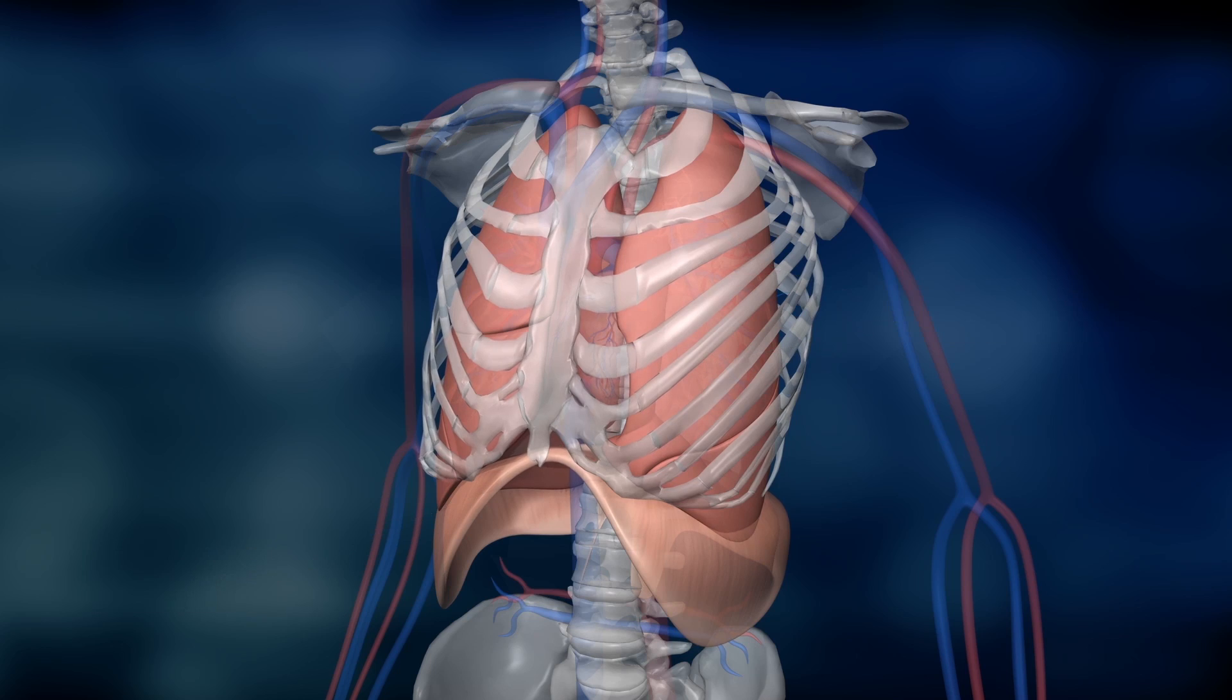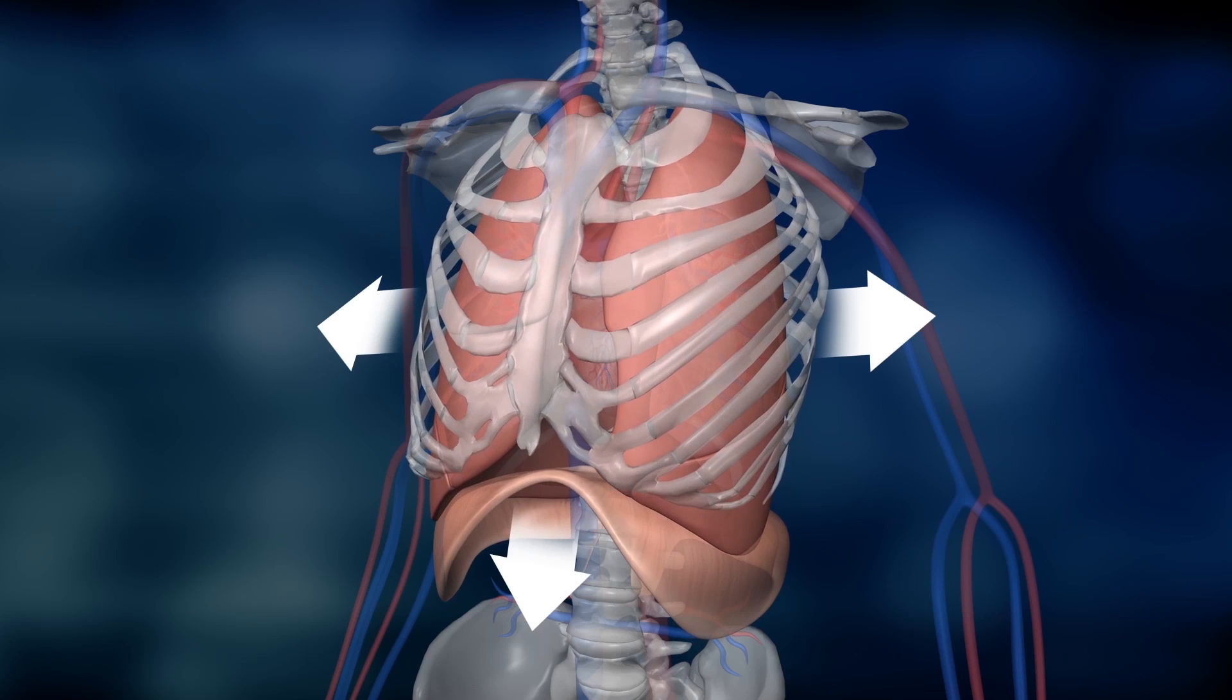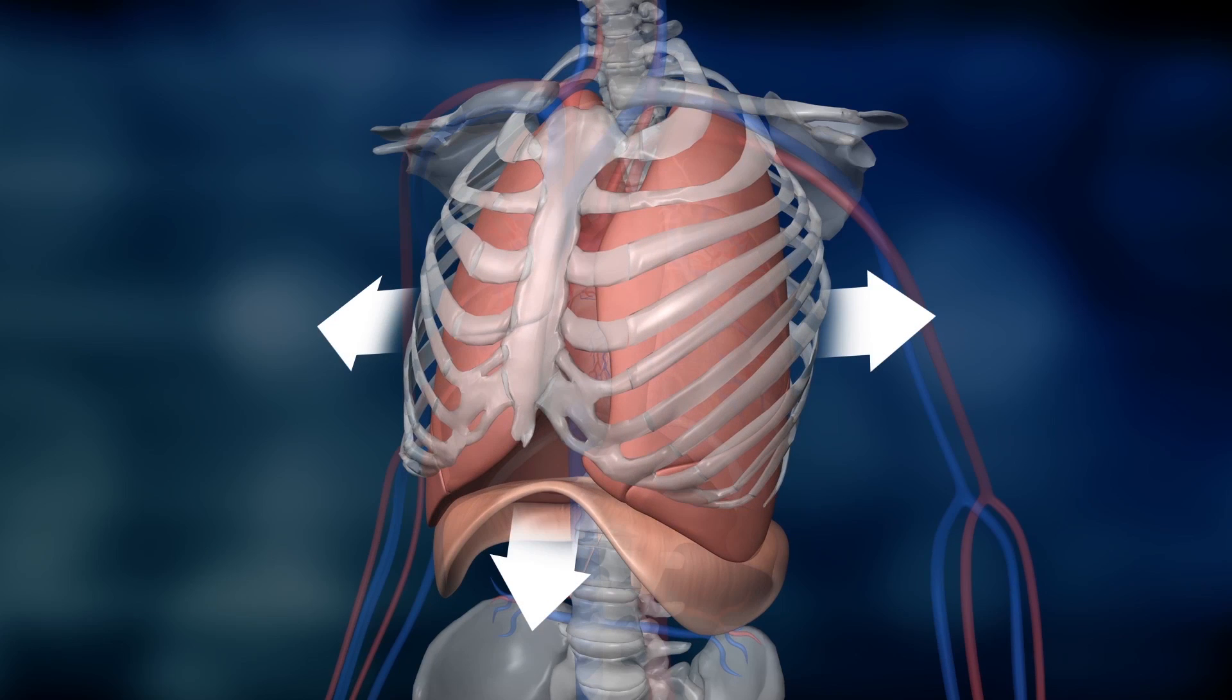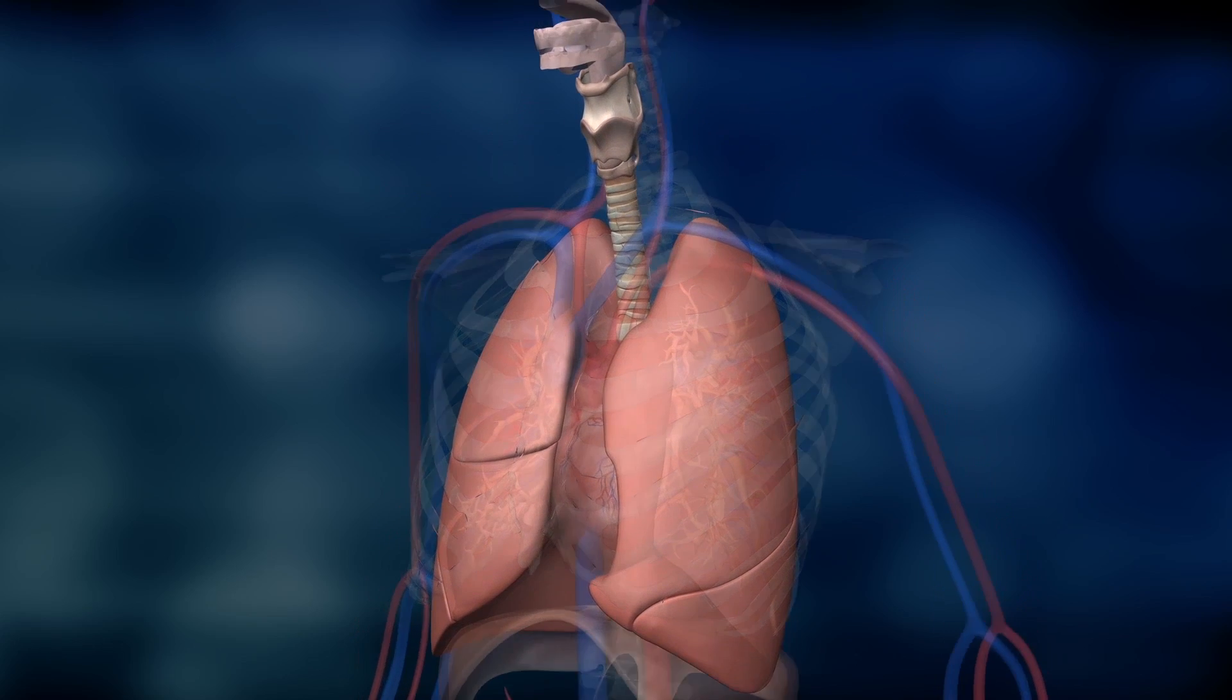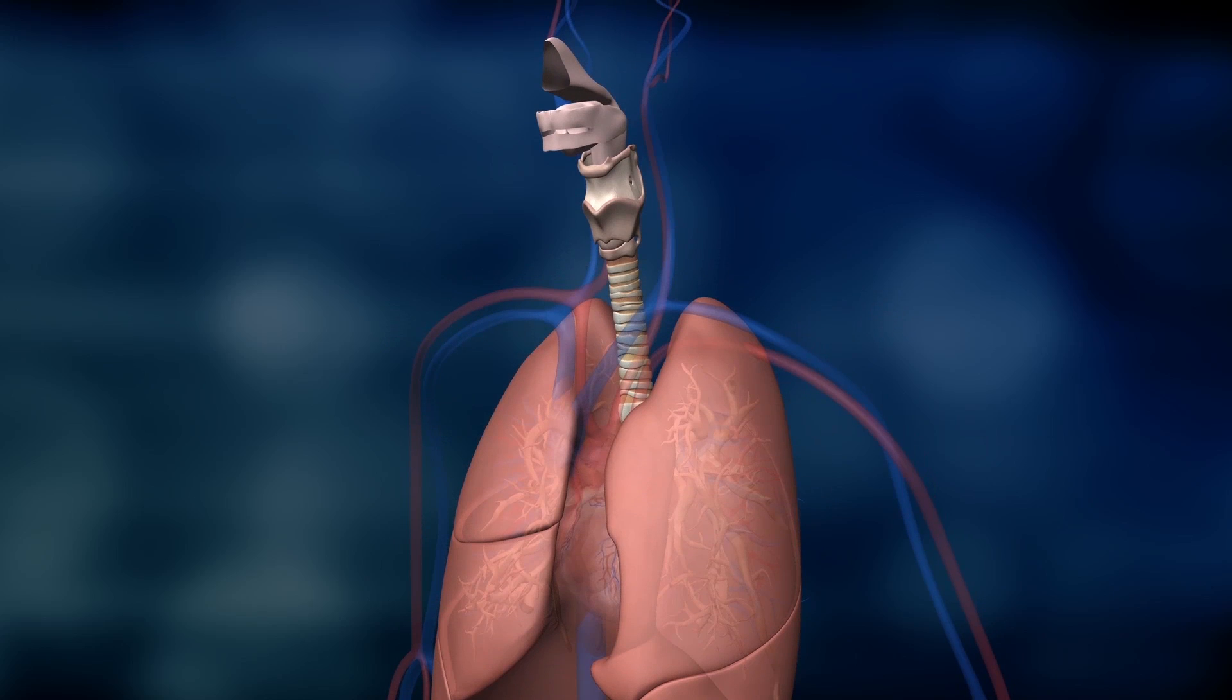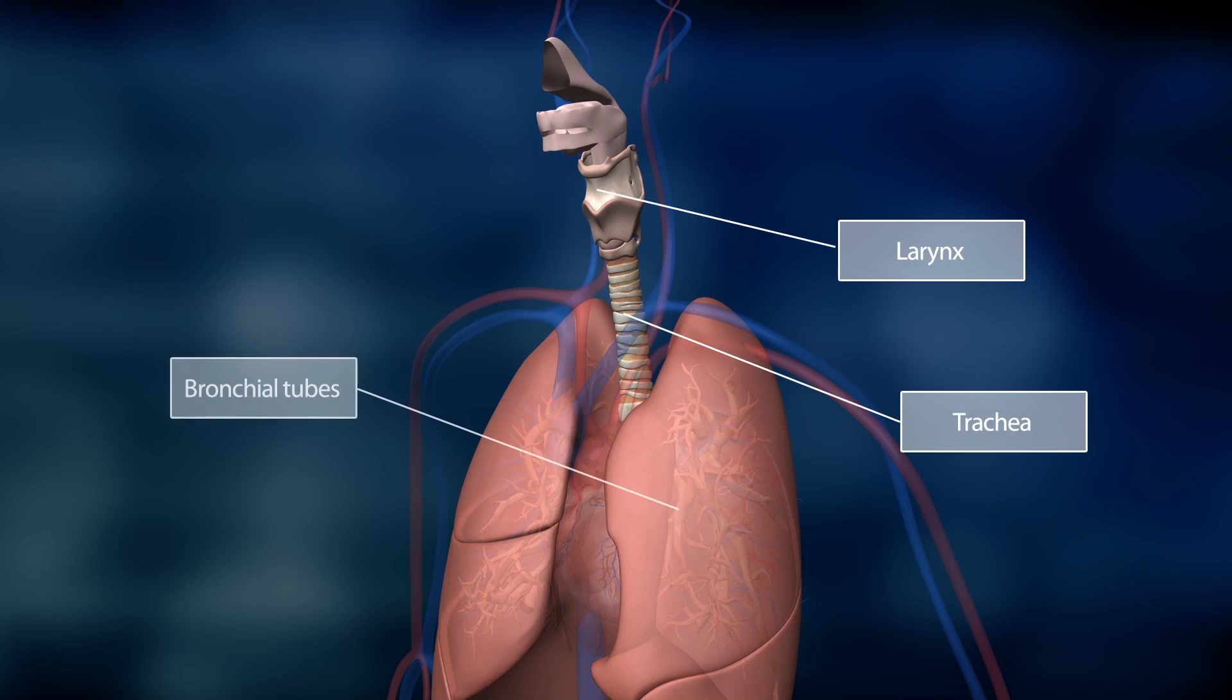When the muscles contract and the lungs expand, air is sucked in through the mouth and nose. This is called inhalation. The nose filters, moistens and warms the inhaled air before it passes through the larynx, trachea and the bronchial tubes.